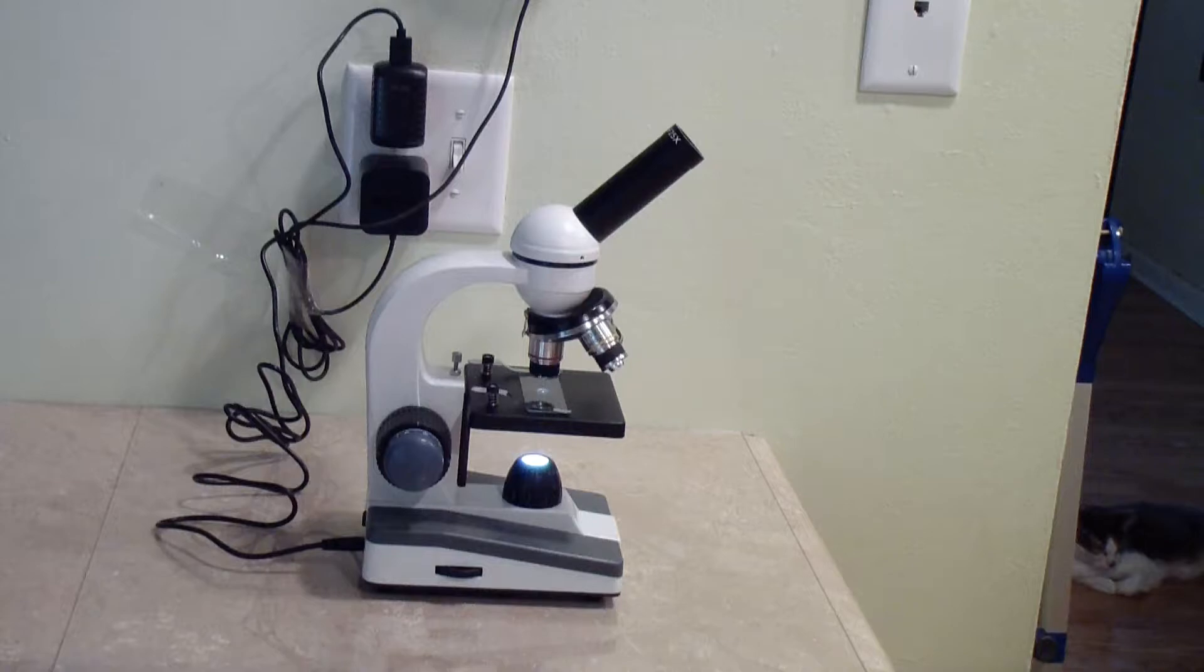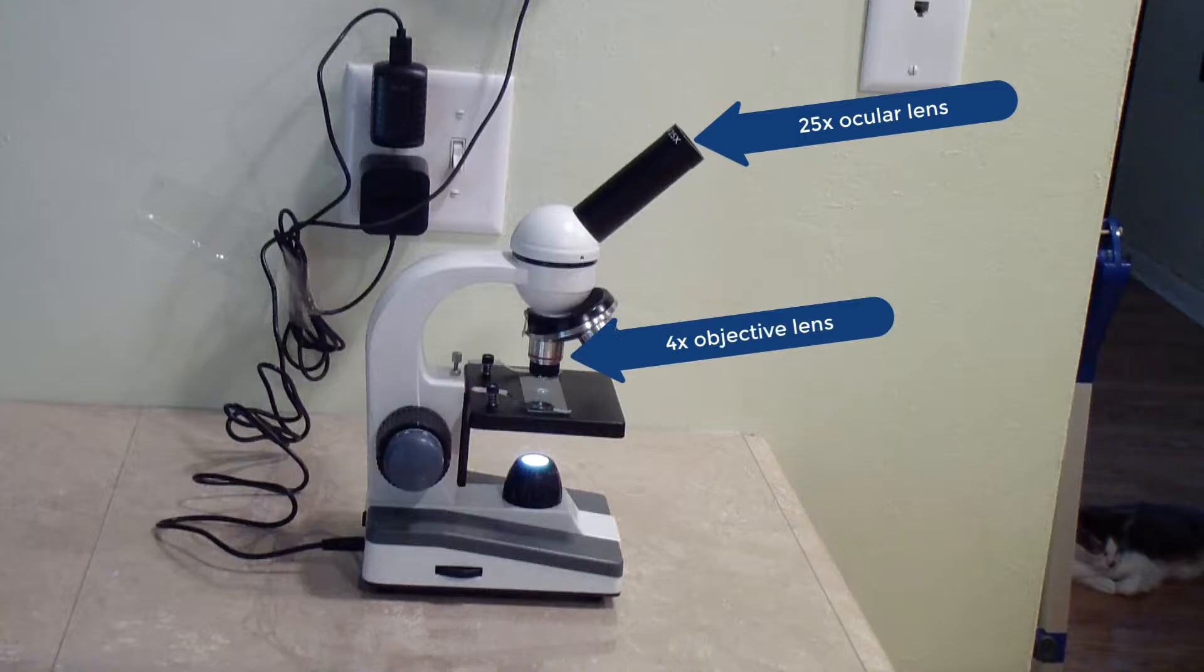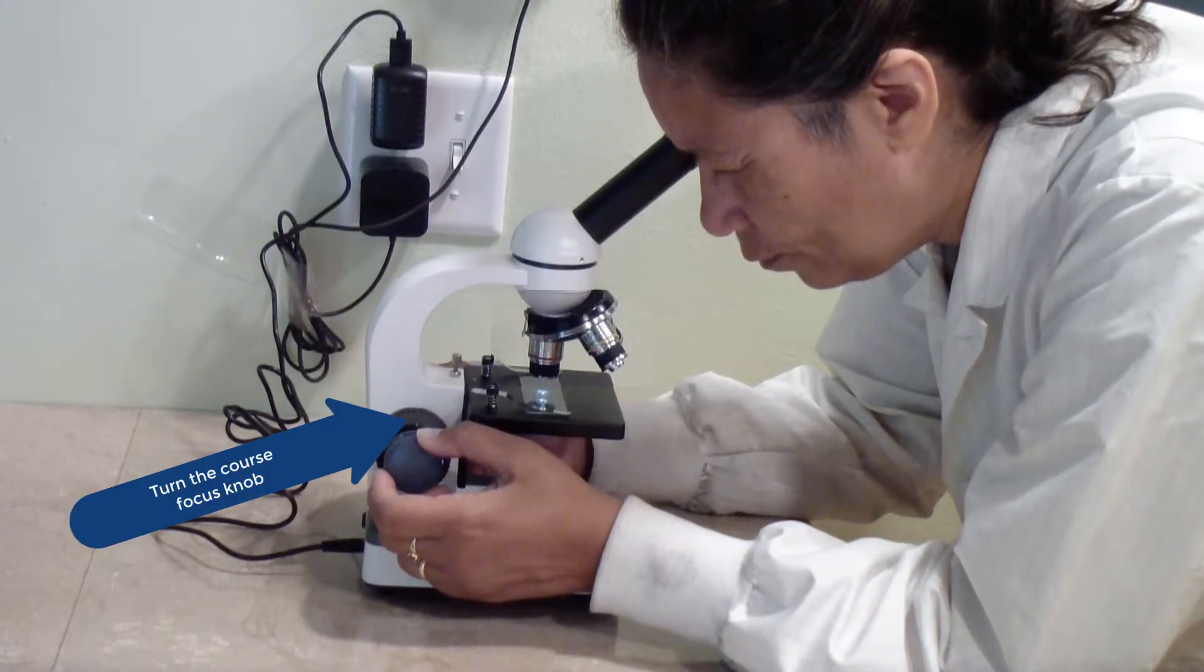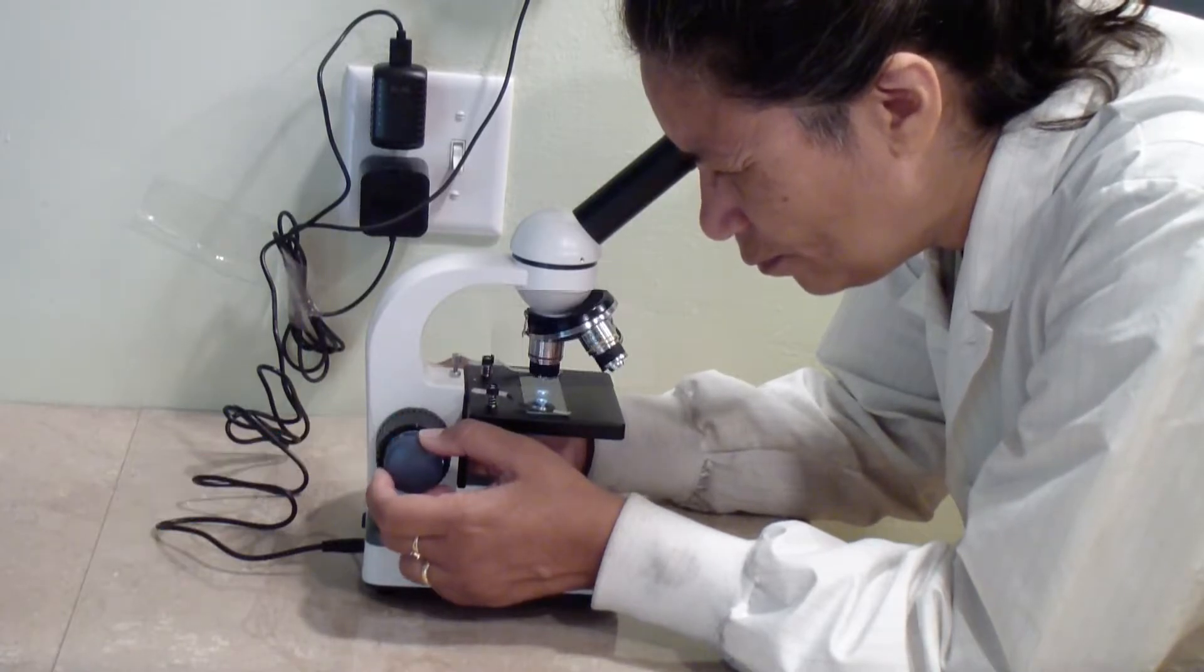Here is how you focus the microscope. Start with a 25x ocular lens and the 4x objective in place. Look through the eyepiece and turn the coarse focus knob until what you see becomes sharp.